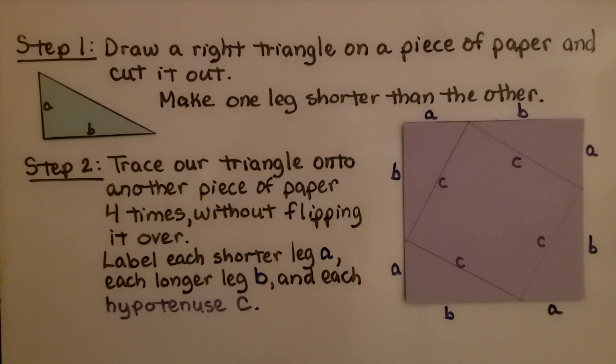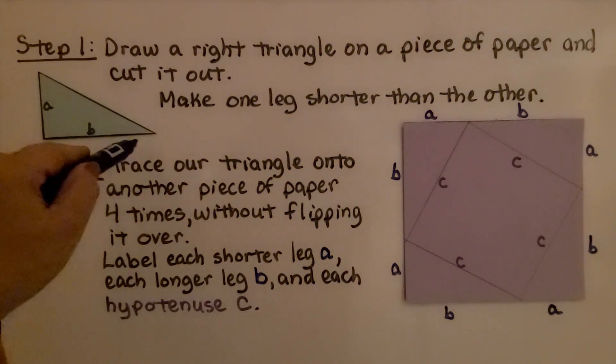The very first step is we draw a right triangle on a piece of paper and cut it out. We make one leg shorter than the other. So we have a short leg and a long leg.